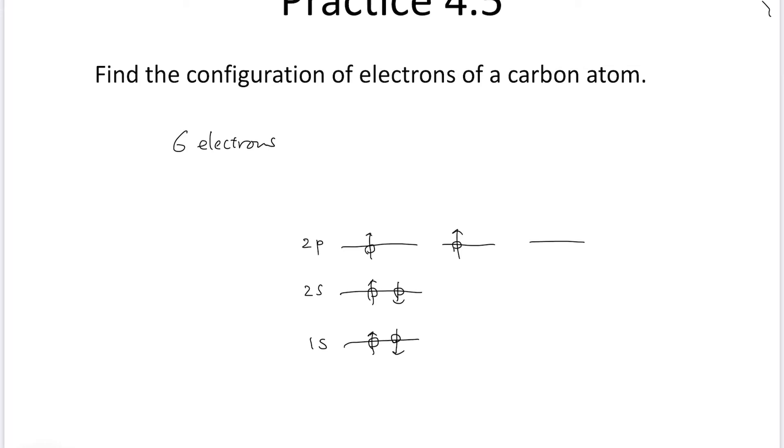The configuration can be expressed as: 1s state has 2 electrons, 2s state has 2 electrons, and 2p state has 2 electrons.